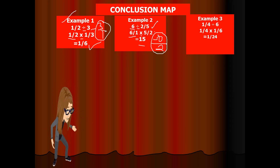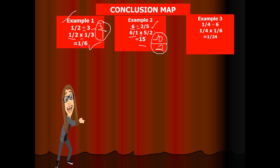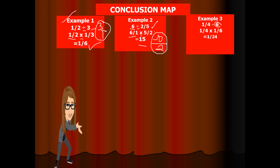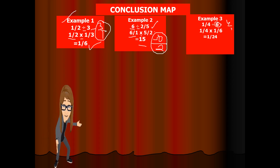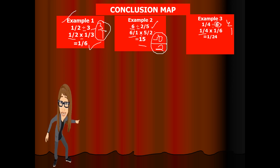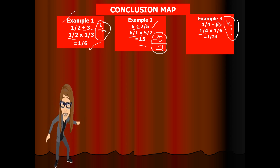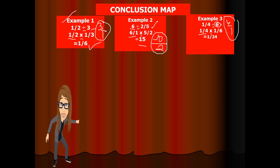Now we have 1 fourth divided by 6. You rename 6 as 6 over 1, and then we keep 1 fourth. Change the sign of division to multiplication. Get the reciprocal of 6 over 1, which is 1 over 6. Then multiply: 1 times 1 is 1, and 4 times 6 is 24.